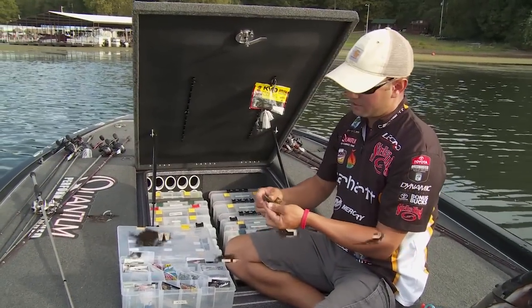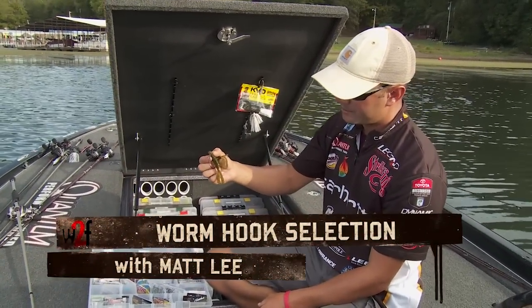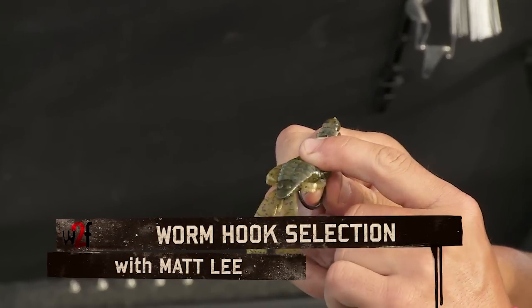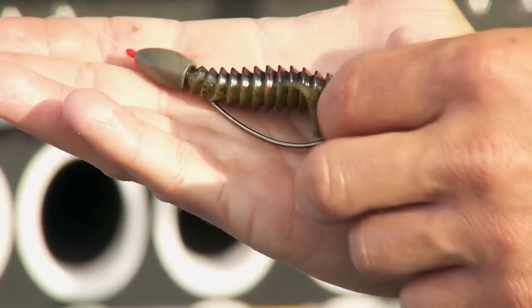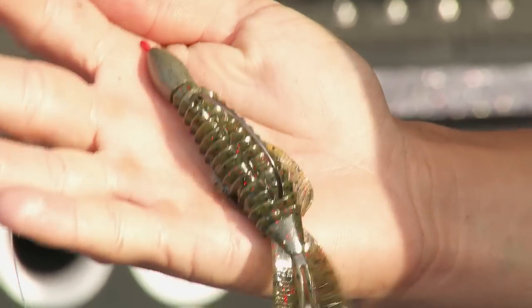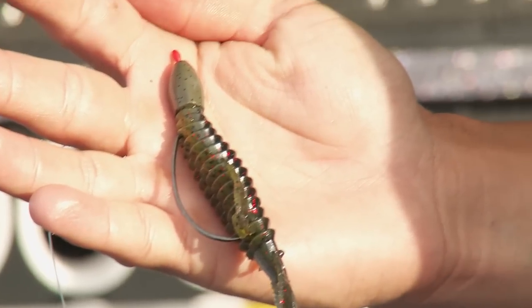The craze today are these massive flipping hooks, tuna hooks almost, but for fishing heavy matted vegetation I use the EWG super line. Still have a great hookup ratio, don't lose fish, and I fish a lot more cleaner around grass.